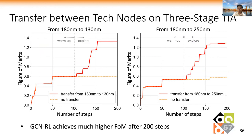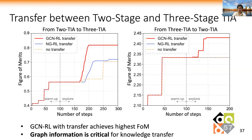Here we show the knowledge transfer between technology nodes on the three-stage transimpedance amplifier. The agent is trained on 180 nm and then transferred to 130 nm and 250 nm technology nodes. GCNRL is shown in the red curve, and our method can achieve much higher figure-of-merit values after only 200 steps. We also experiment on transfer learning between two-stage and three-stage transimpedance amplifiers. The red curve is transferred with graph information, the blue curve is transferred without graph information, and the yellow curve is no transfer. Transfer learning with graph information achieves the highest performance, and transfer without graph information is very close to no transfer, showing that graph information is quite critical to transfer learning between topologies.